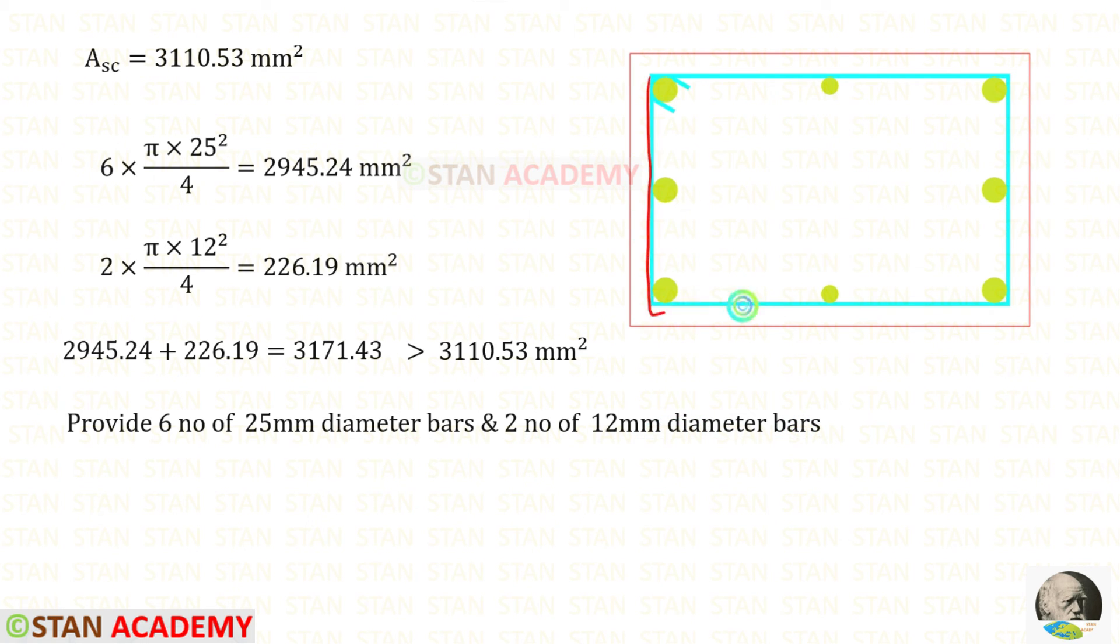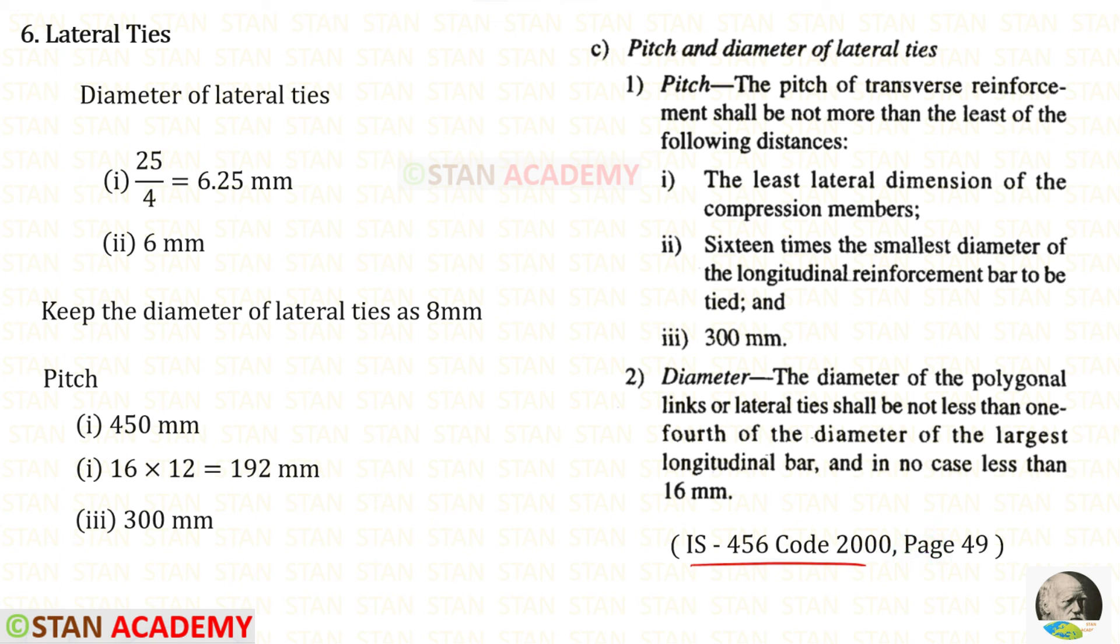Now we are going to design the lateral ties. Let us open this code book page number 49. The diameter of the lateral ties shall be not less than 1/4th of the largest longitudinal bar and in no case less than 6 mm. In this book 16 mm is error. It is mistyped. Actually it is 6 mm. First let us try with 1/4th of the diameter of the largest longitudinal bar. We know that the largest diameter we provided was 25 mm. 25 upon 4 we will get 6.25 mm and the second condition is that in no case it should not be less than 6 mm. So the diameter of the lateral ties should not be less than these two. In this case let us keep the diameter of the lateral ties as 8 mm.